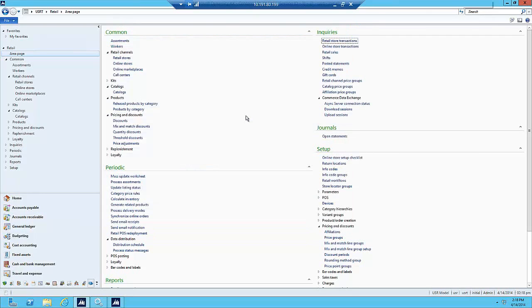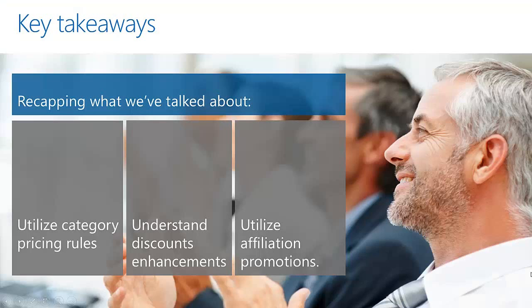That concludes the demo portion of pricing and discounts. What we've talked about today is utilizing category pricing rules and exporting those out to Excel and importing them back in. We've understood the discount enhancements, and we've utilized the affiliation promotions along with the threshold discount. Thank you for spending time going through the pricing, promotion, and discount features of Microsoft Dynamics AX 2012 R3.